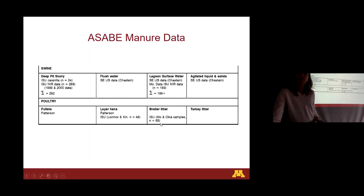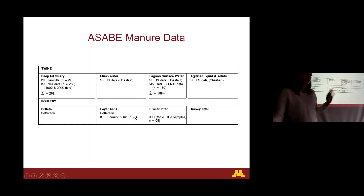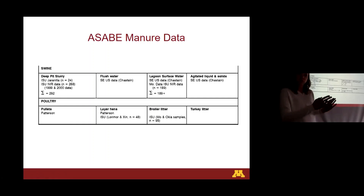For broiler litter they had Missouri and Oklahoma samples — 95 of them. Layer hens, 48 samples. So those are just what they used for an average to put into these standards.